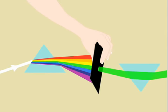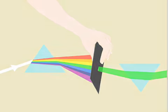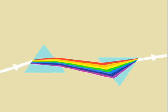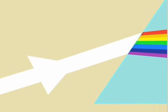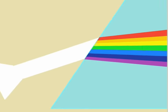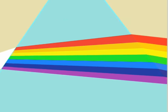The prism did not change the light. In further experiments, he was able to make a spectrum using one prism, and use a second prism to join the colours back together again to make white light. Newton developed our current understanding of light — that what we see as white light is in fact made of many different colours added together. A prism is able to separate these colours.